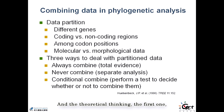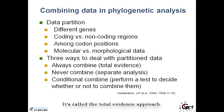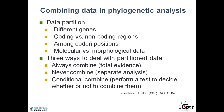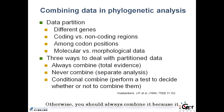The first school of thinking says you should always combine. As long as data is from the same taxa, you should combine it — this is called the total evidence approach. Conflict doesn't really matter, and only if you are really certain there's a horizontal gene transfer problem should you not combine. Otherwise, you should always combine, because the data represents part of the genome or part of your taxa.